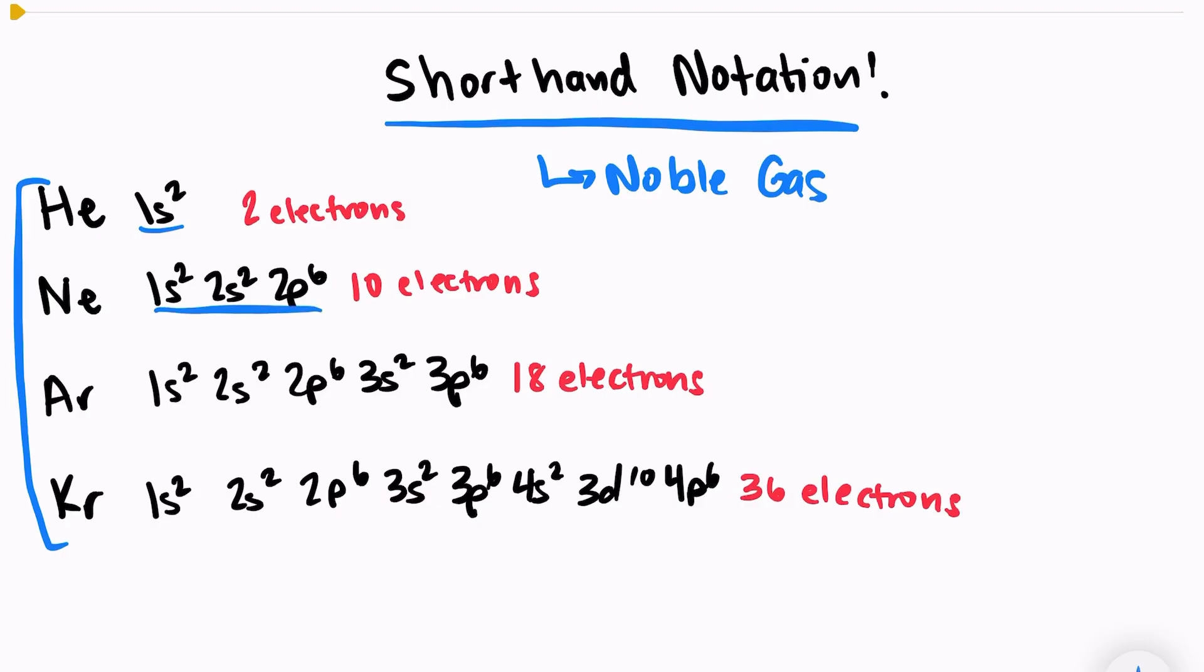And here's their electron configurations. Notice helium can hold two electrons, neon has 10, argon has 18 electrons, and krypton has 36 electrons.